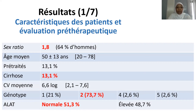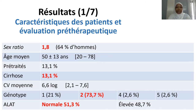Nous avons colligé au total 76 patients avec un sex ratio de 1,8 : 64% étaient des hommes, l'âge moyen était de 50 ans. 13% des patients avaient été préalablement traités par l'interféron pégylé et la ribavirine. 13% de nos patients étaient cirrhotiques. La charge virale moyenne préthérapeutique était de 6,6 log. 74% des patients étaient infectés par un VHC de génotype 2. Les autres génotypes répertoriés étaient le 1, le 4 et le 5. Une cytolyse était présente dans près de la moitié des cas.